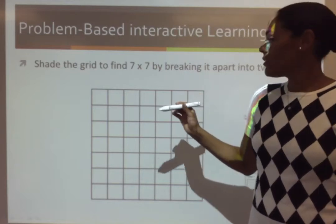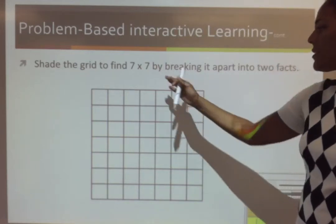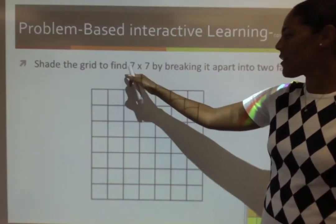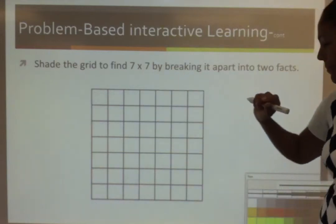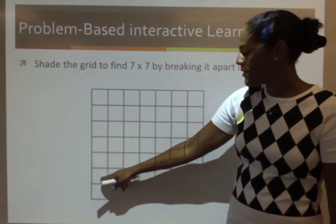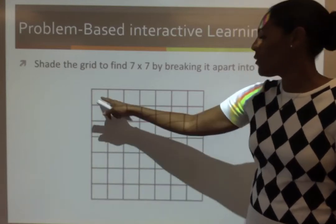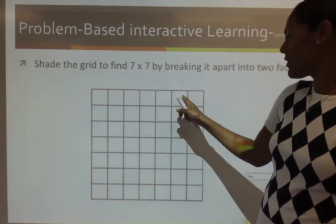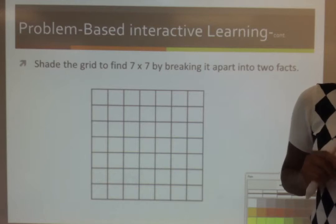We are going to shade the grid to represent 7 times 7, 7 rows and 7 columns. 1, 2, 3, 4, 5, 6, 7, 1, 2, 3, 4, 5, 6, 7. So, I need to break this apart.